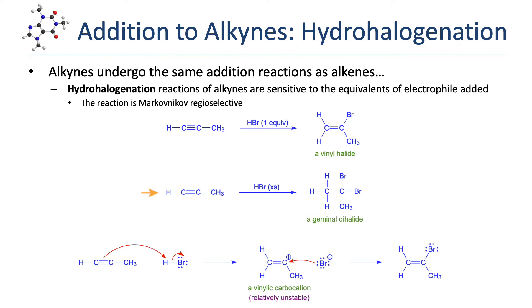In the second example, an excess of HBr is used. The reaction proceeds to add HBr across each of the two carbon-carbon pi bonds, resulting in a geminal dihalide. And again, because the reaction is Markovnikov regioselective, the two halogens are placed on the more substituted carbon of the alkyne.